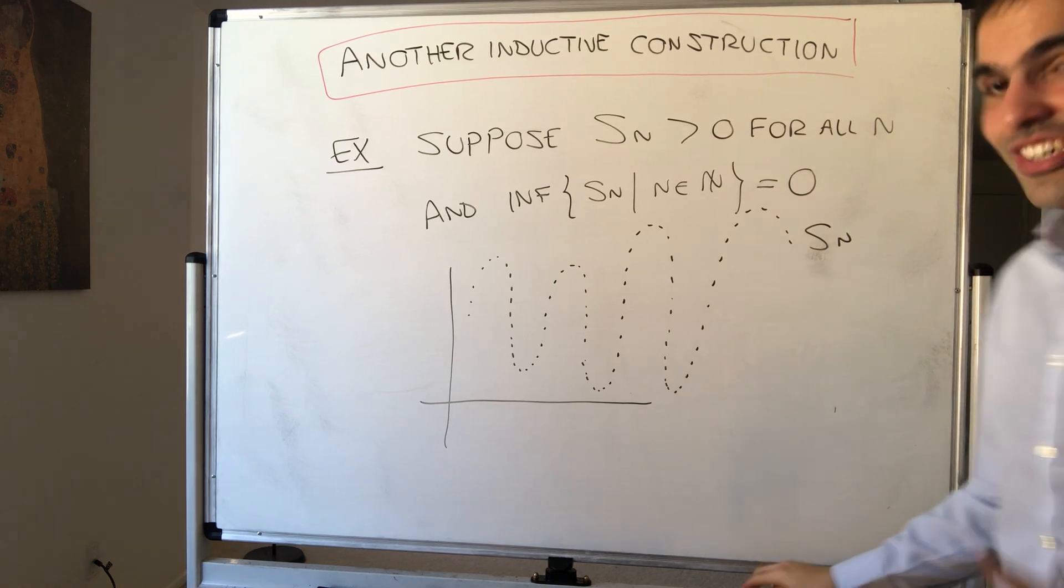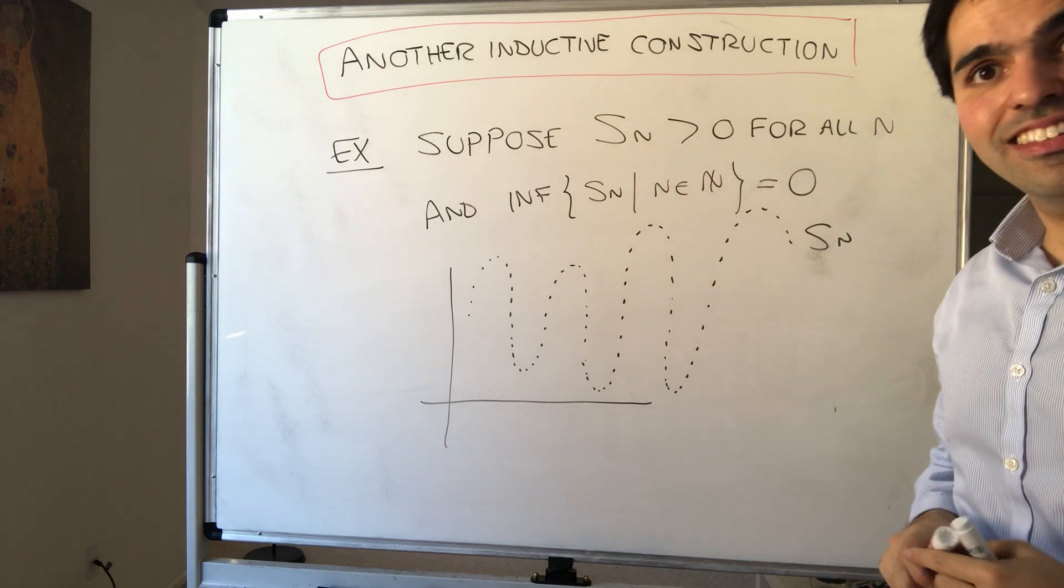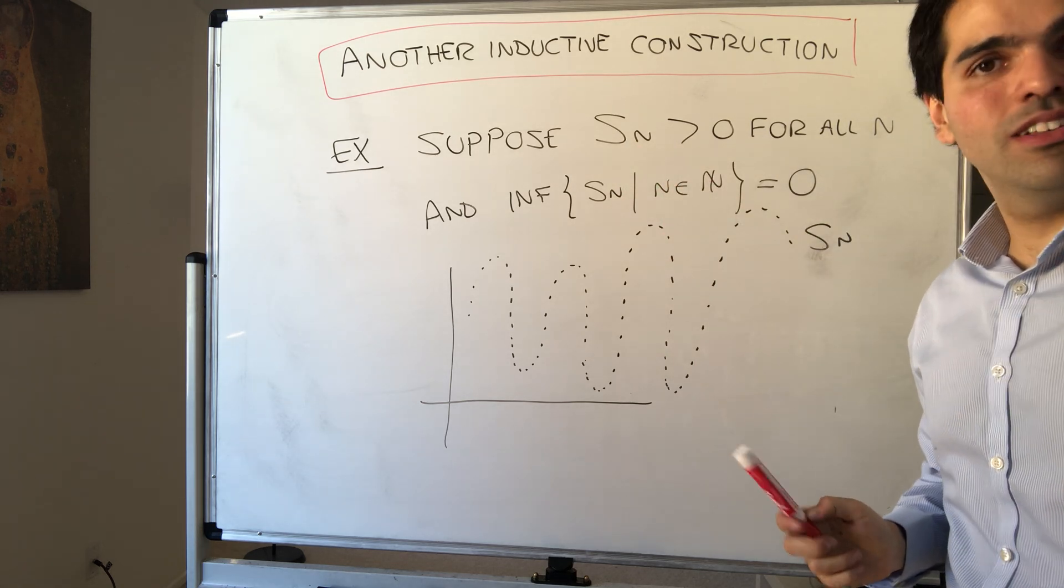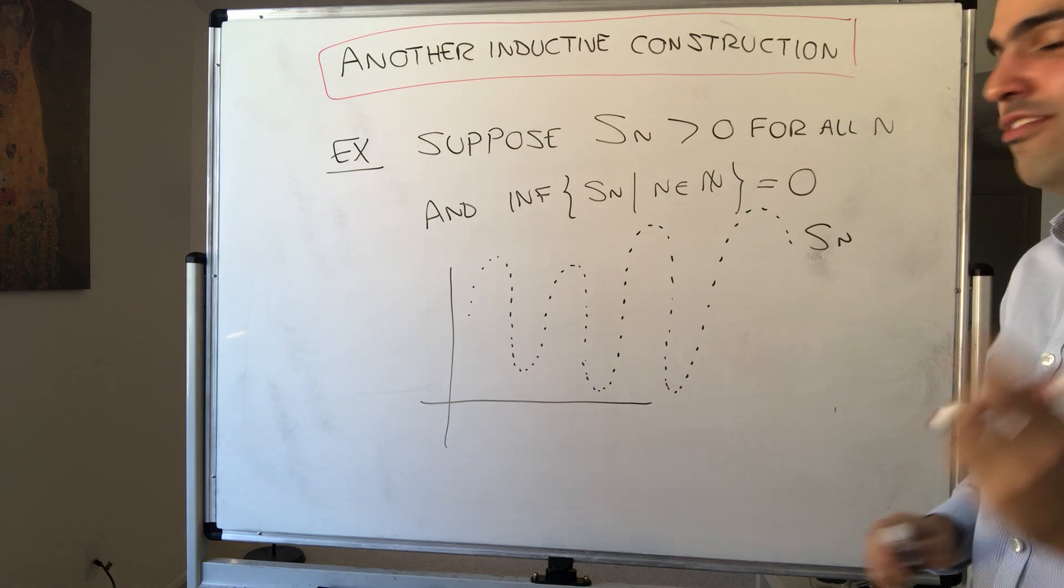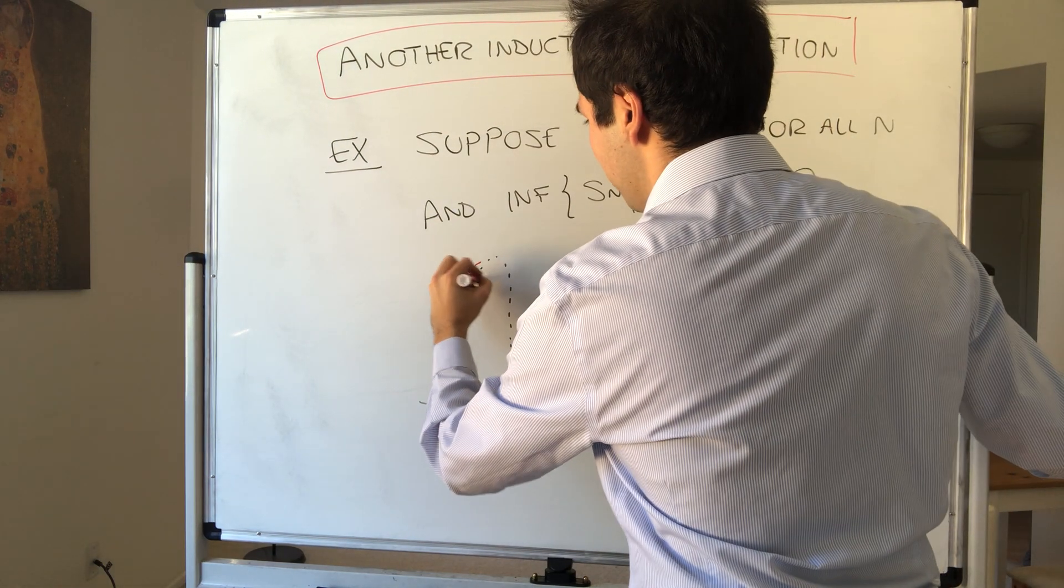Now, what we want to show is something pretty amazing, namely, not only does Sn have a subsequence that goes to zero, but in fact it has a decreasing subsequence that goes to zero.